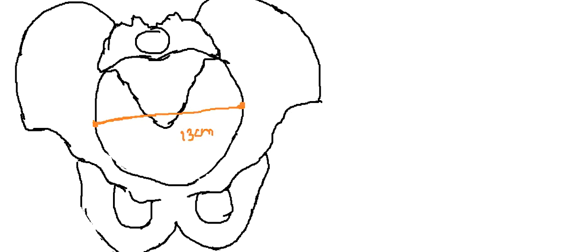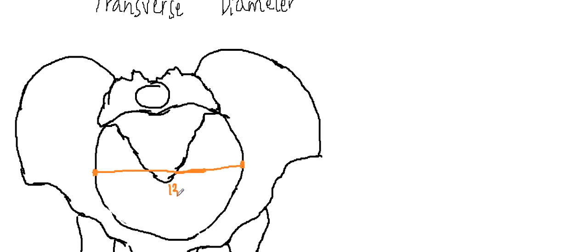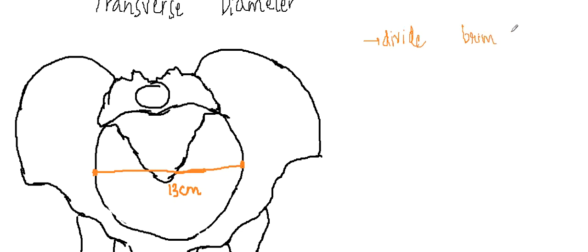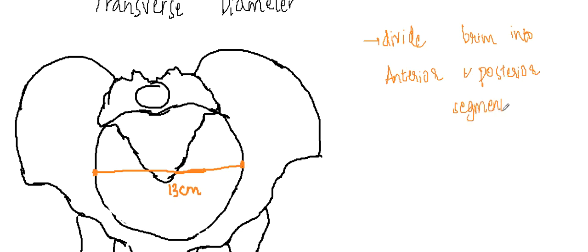The length of this transverse diameter is 13 centimeters. The important points about this diameter are: it is closer to the sacral promontory, and it divides the brim into anterior and posterior segments. The fetal head has to negotiate the brim through this diameter.